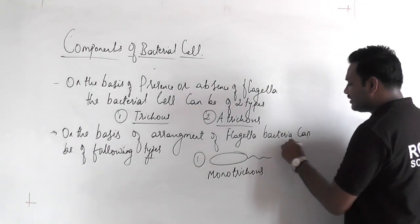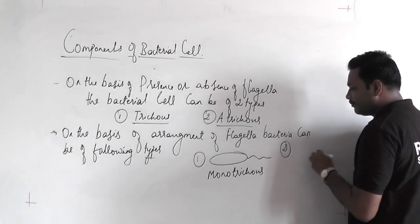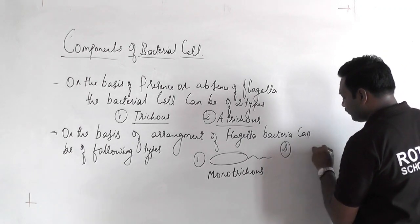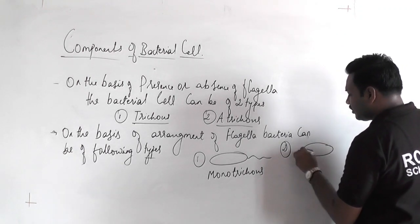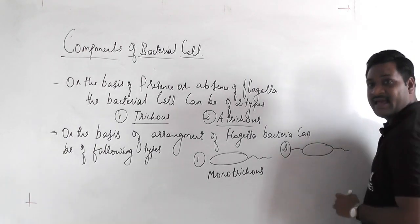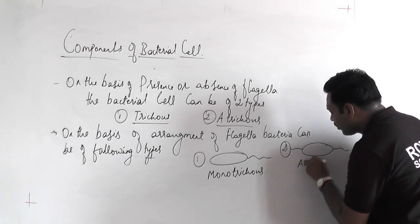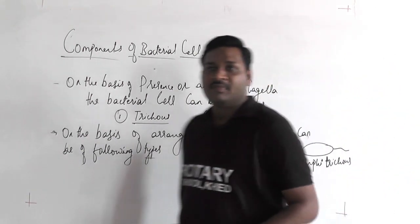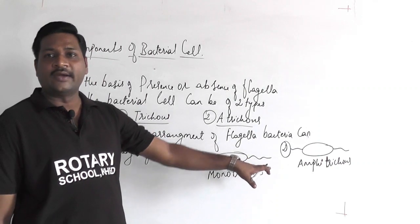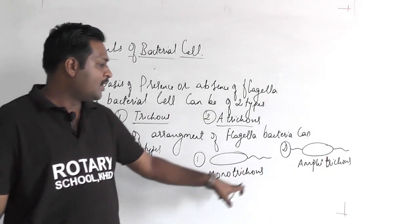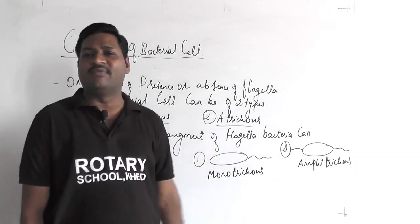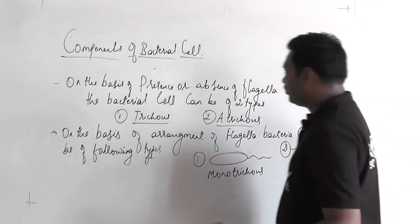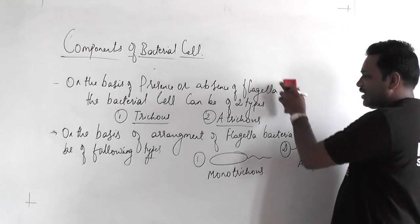If a bacterial cell has a single flagellum, it is called monotrichous. If it has flagella located on both sides, it is called amphitrichous. You can pause the video and note these points.